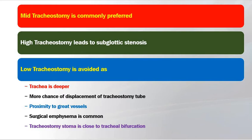We should avoid either very high or very low tracheostomy. High tracheostomy leads to subglottic stenosis. Low tracheostomy is avoided because the trachea is deeper as it goes down, increasing the chances of displacement of the tracheostomy tube. The trachea is in closer proximity to the great vessels, raising the risk of vascular injury. Also, as the stoma is near the lung apex, there may be surgical emphysema, and air entry may go into only one lung, leading to collapse of the opposite lung.